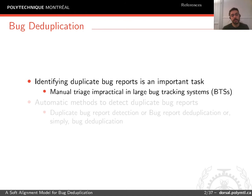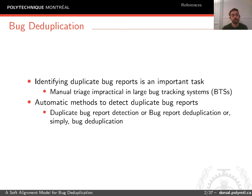Identifying duplicate bug reports is an important task, especially for large bug tracking systems. Manually triaging reports in those systems is impractical. To solve this problem, you can use methods that automatically detect duplicate bug reports. This problem is called duplicate bug report detection, bug report duplication, or simply bug duplication.